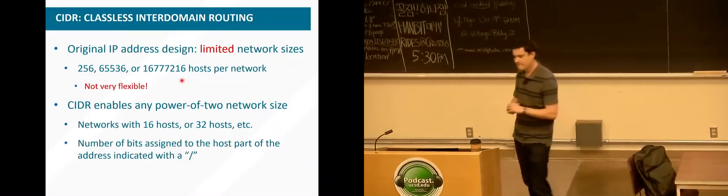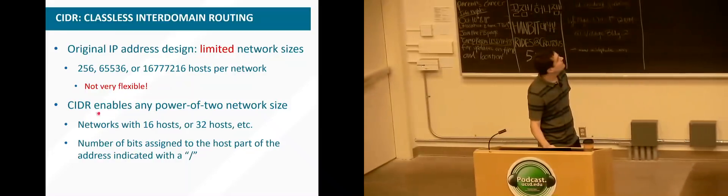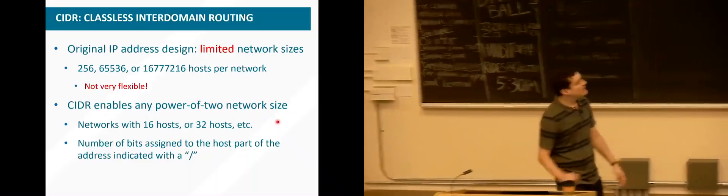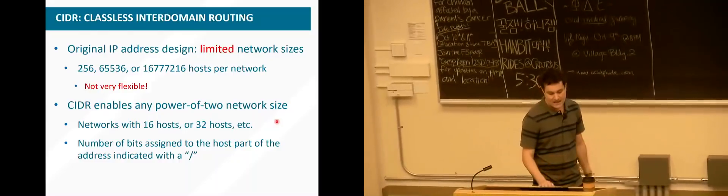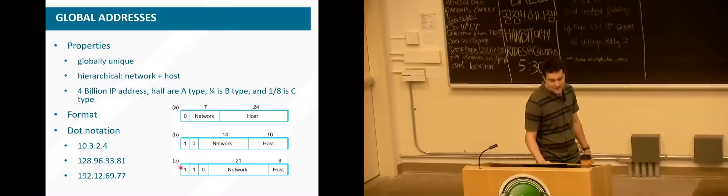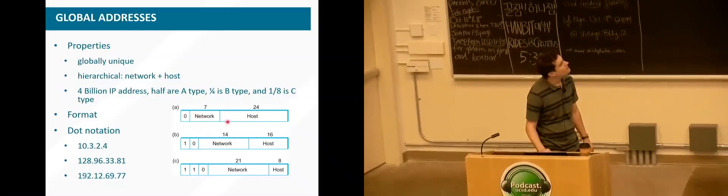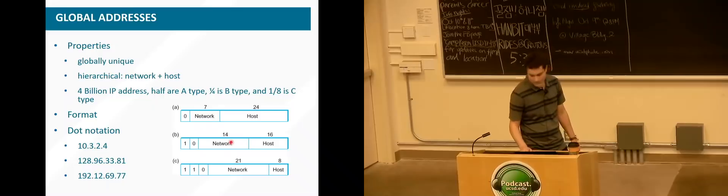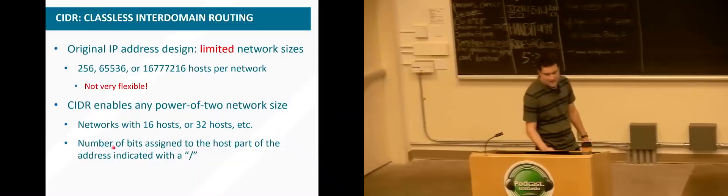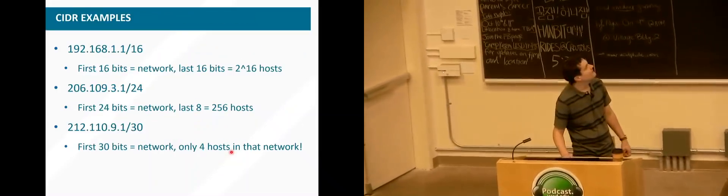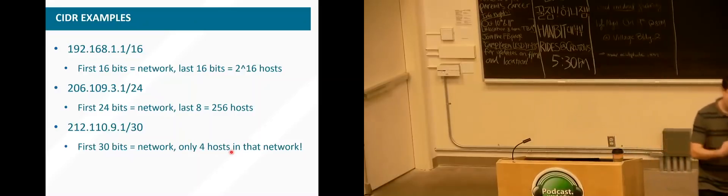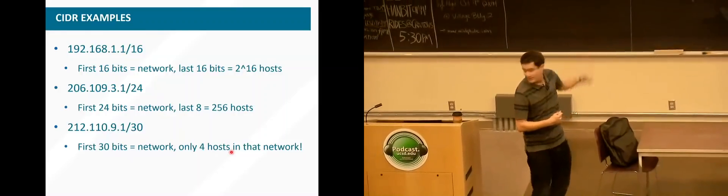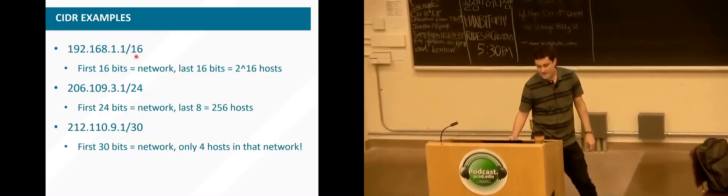There is a technology called CIDR — Classless Interdomain Routing — which enables you to build a network that's any power of two. So I could create a network with only 16 hosts or 32 hosts. Before, the size of the network was determined by the first couple bits of the IP address. Now, the number of bits assigned to a host is part of the address, indicated with a slash. The reason I'm going through this is because, as part of the web server project, you're going to be specifying IP addresses, and this slash notation is commonly used in the networking world.